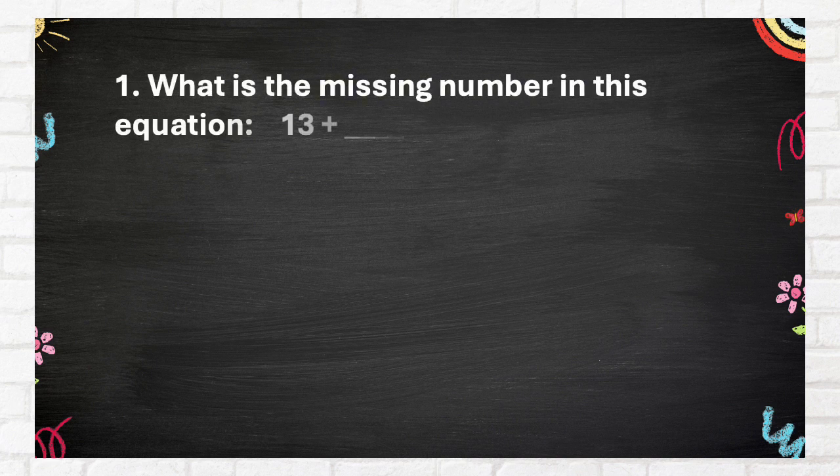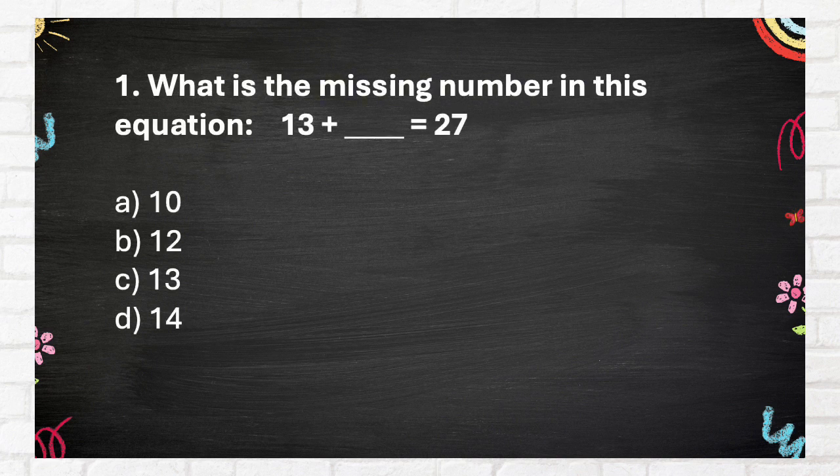What is the missing number in the following equation? Again, what is the missing number in the following equation? A. 10. B. 12. C. 13. D. 14.